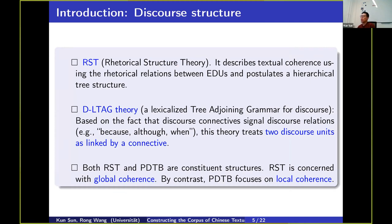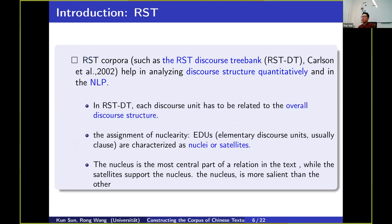RST describes textual coherence using rhetorical relationships between discourse units and postulates a hierarchical tree structure. RST fixes discourse relationships globally, meaning it can sense global coherence. In contrast, PDTB focuses on local coherence. The first RST treebank was established in 2002 and has been quite influential in analyzing discourse structure computationally and in NLP.